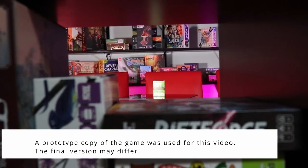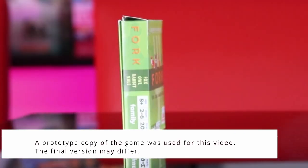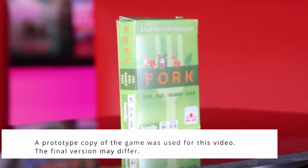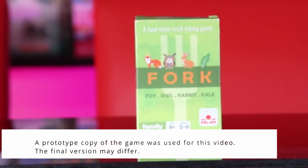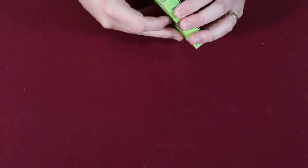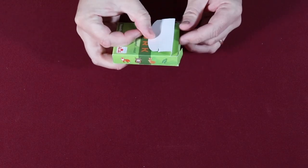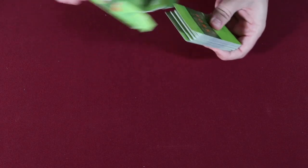Fork is a 2-6 player food chain trick taking game from Sunrise Tornado Games, designed by Tate Wu with illustrations by Lily Chin. Setup and gameplay varies slightly by player count, but in this video I will explain how to play a 4-6 player game.